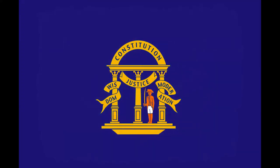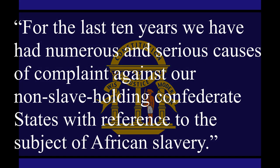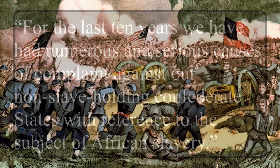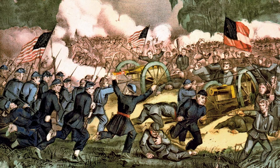First, with Georgia's declaration. It reads: 'For the last ten years, we have had numerous and serious causes of complaint against our non-slaveholding Confederate states with reference to the subject of African slavery.' They refer to the entirety of the United States as Confederate states, as they viewed their union with the rest of the states as a confederation — viewing themselves as independent nations that were part of one nation, not as one nation that was a bunch of little states.